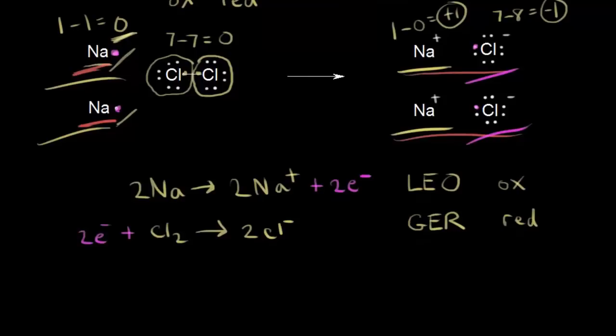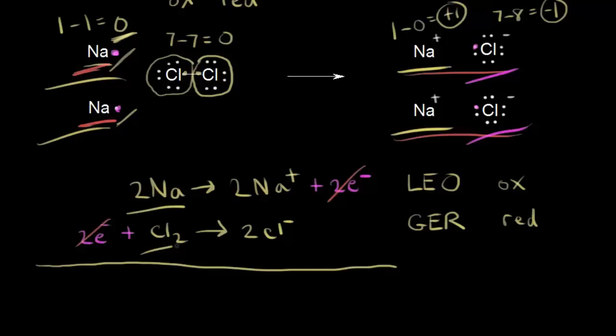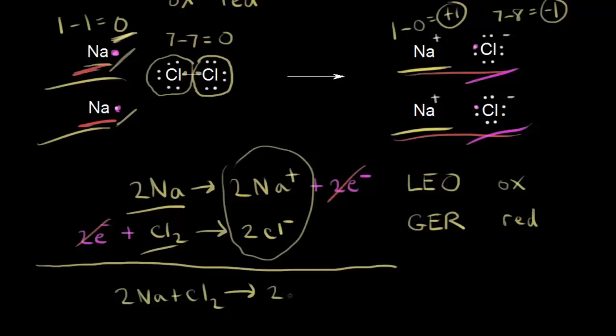If we add the two half reactions together, we get back the original redox reaction because those two electrons cancel out. The electrons lost by sodium are the same electrons gained by chlorine. Adding the remaining reactants gives two sodiums plus Cl₂, and for the products we get two NaCl — which is of course our original balanced redox reaction.